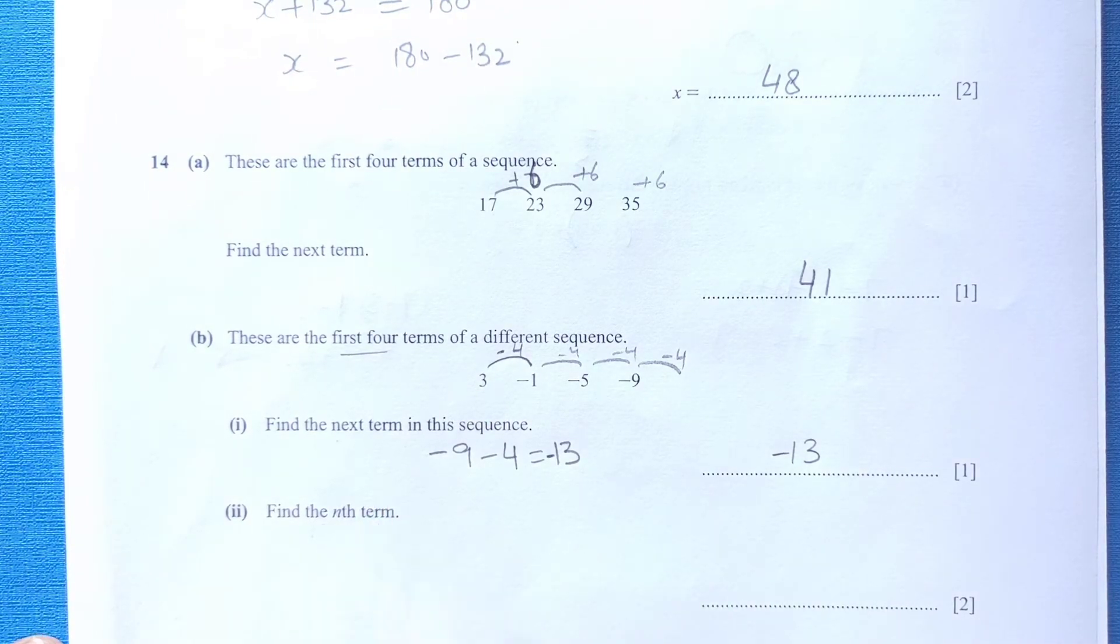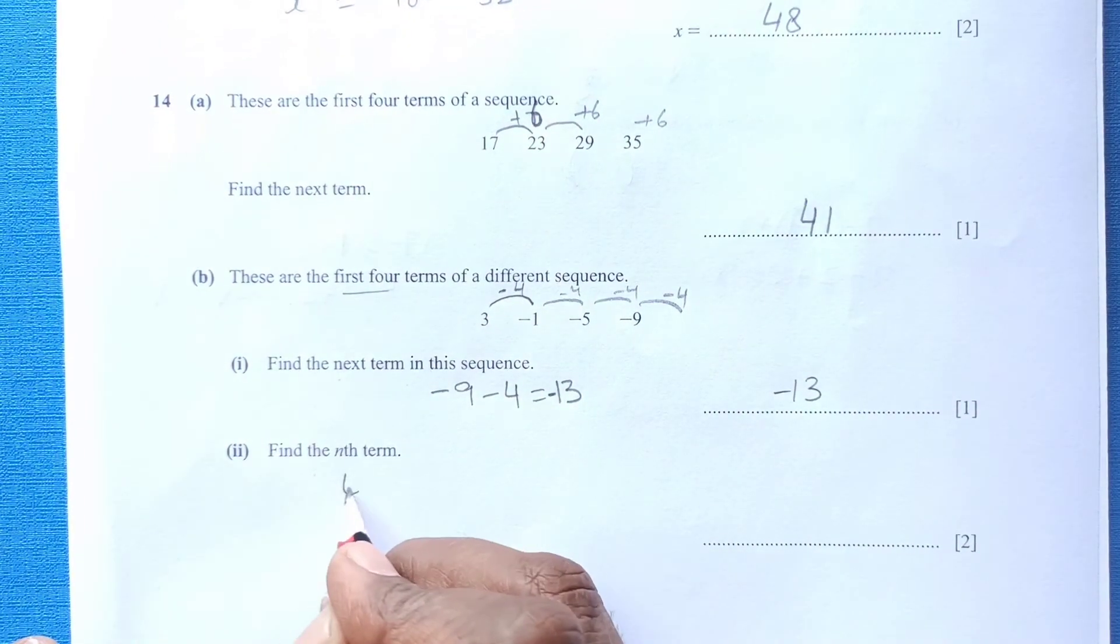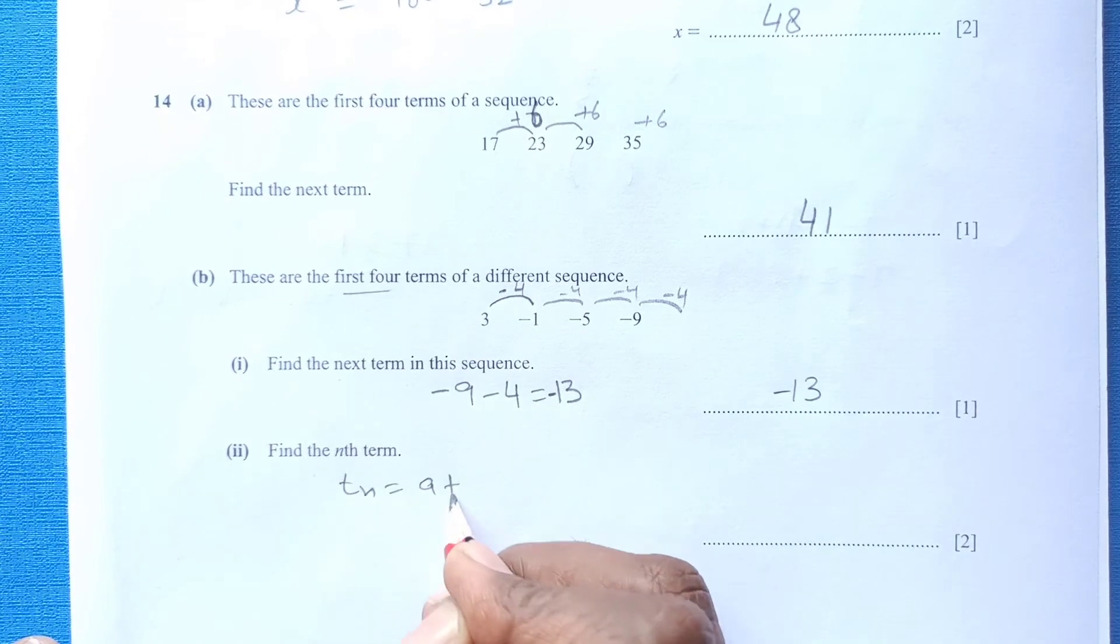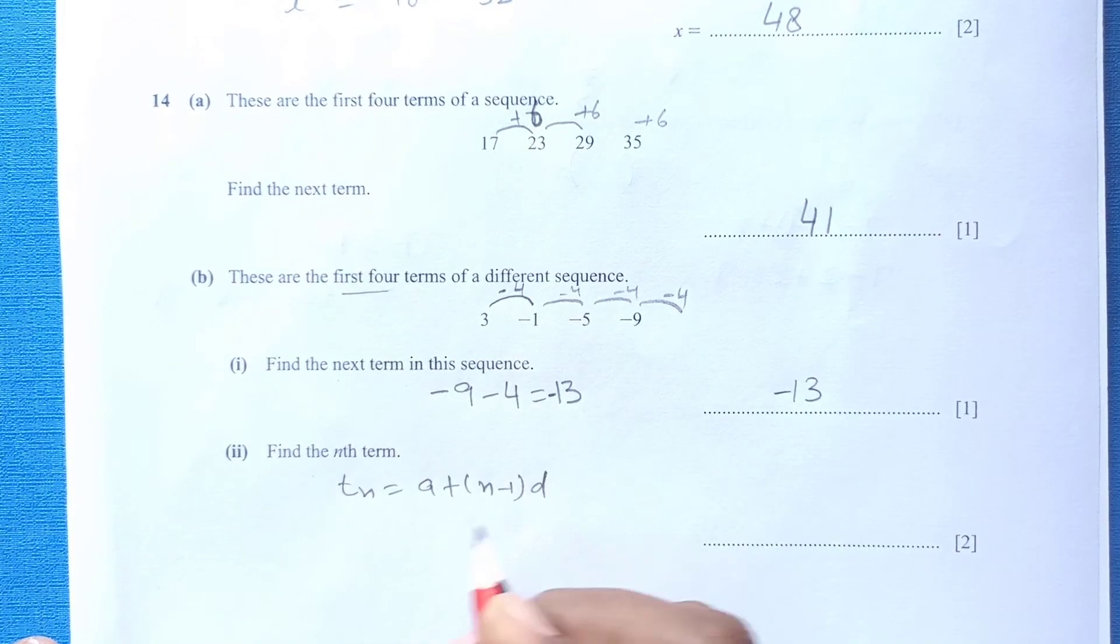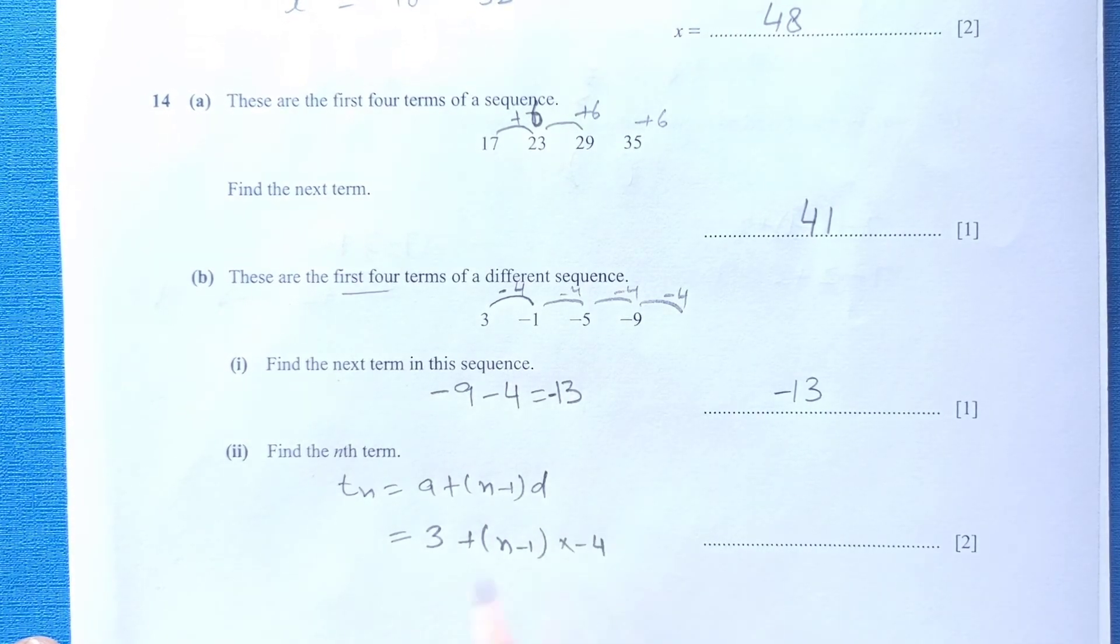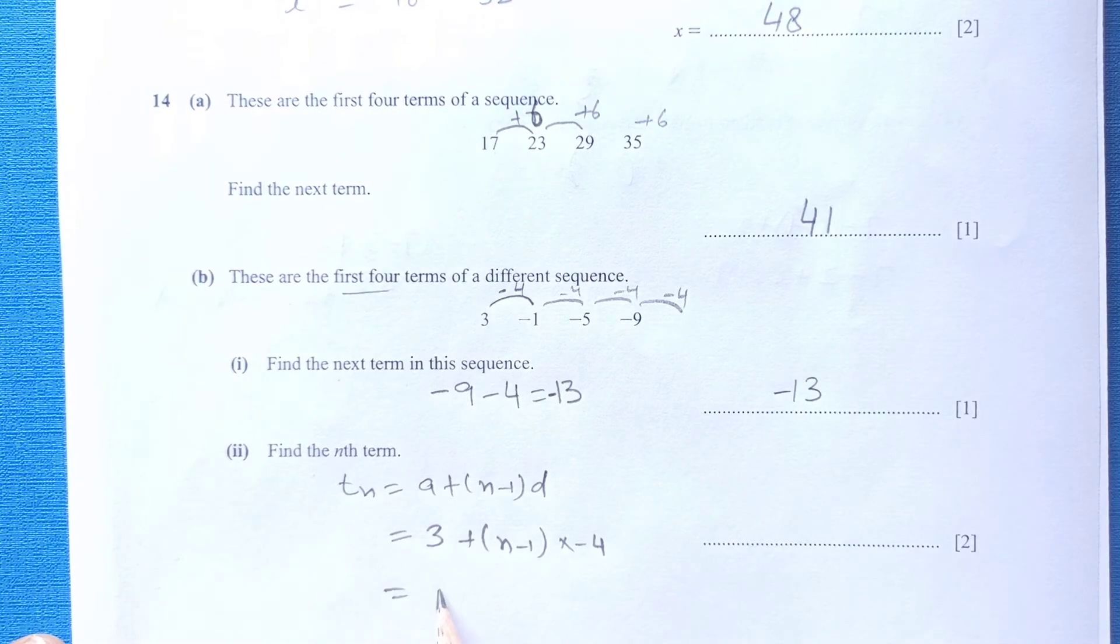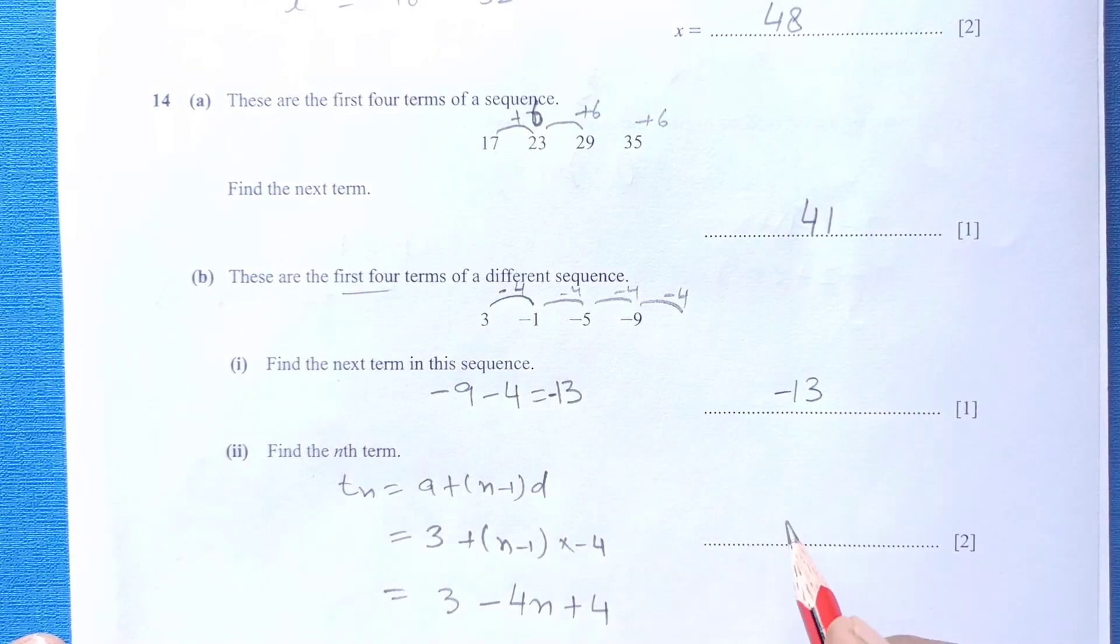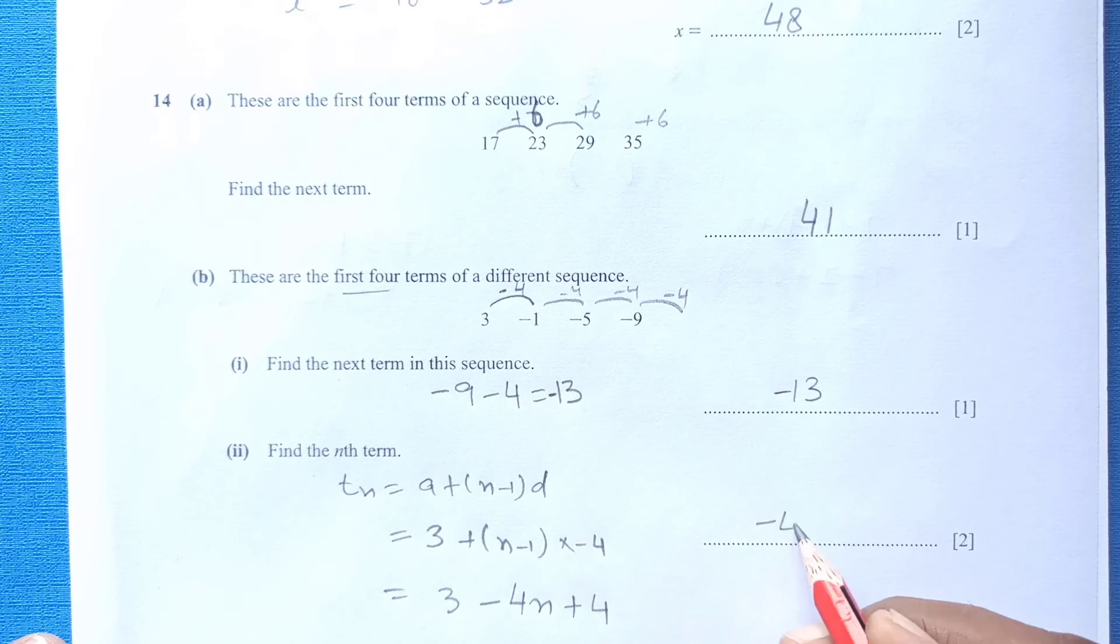Find the nth term. For the nth term, we will use the formula: Tn equals a plus n minus 1 into d. A is the first term which is 3. N minus 1 into d is negative 4. Now open the bracket. 3 when you multiply, negative 4n plus 4. Negative 4n plus 7. So that is the nth term.